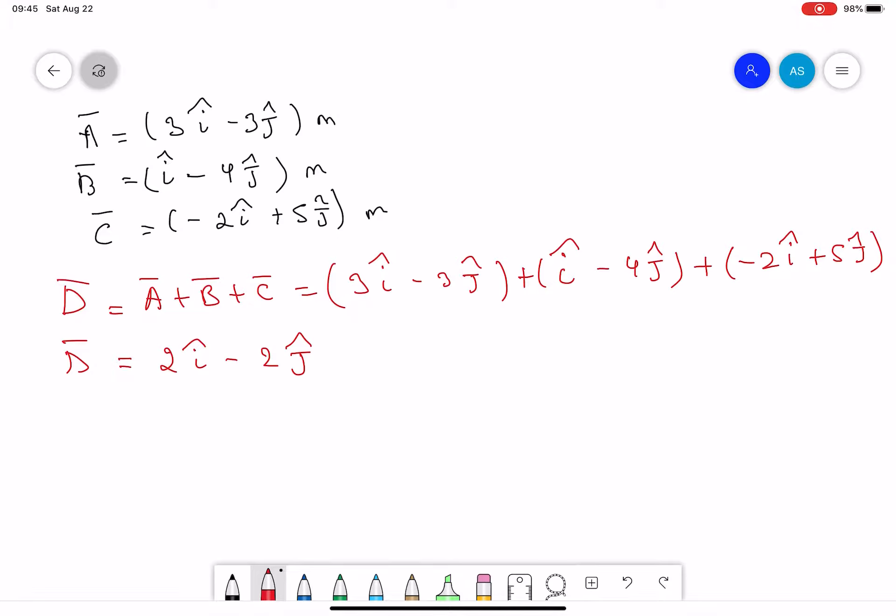Now let's find the magnitude. The magnitude of the D vector can be found by using Pythagorean theorem, which is 2 squared plus (-2) squared.